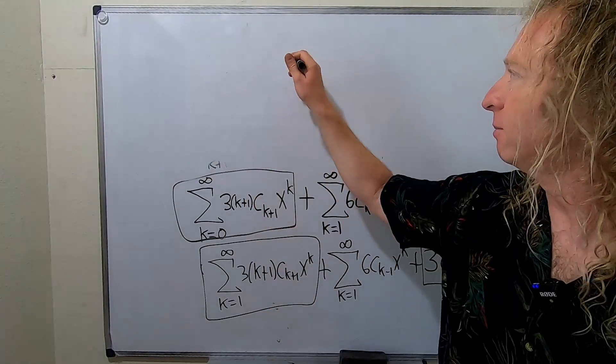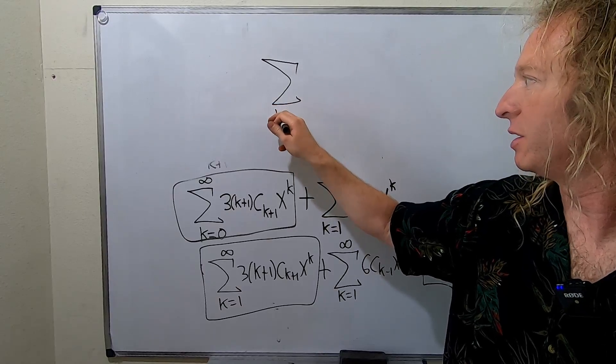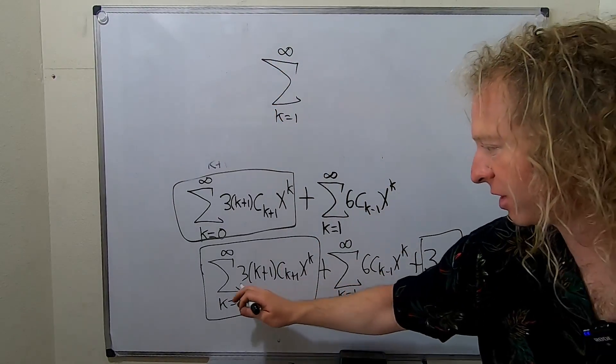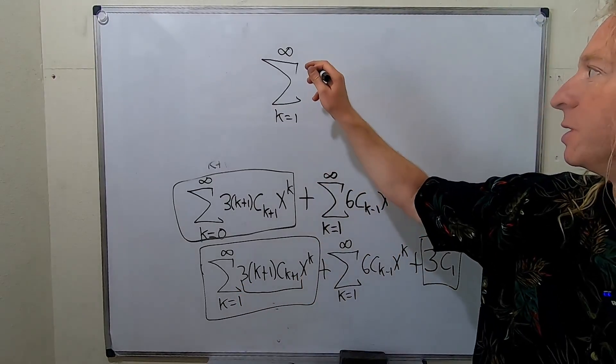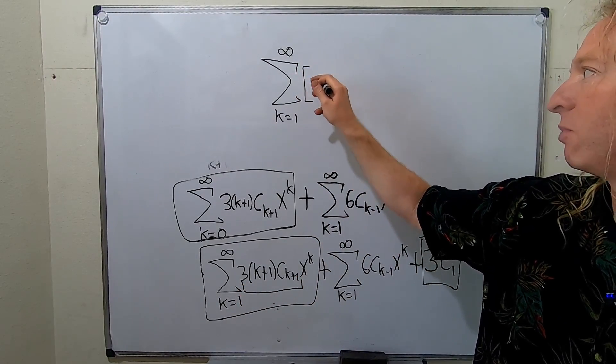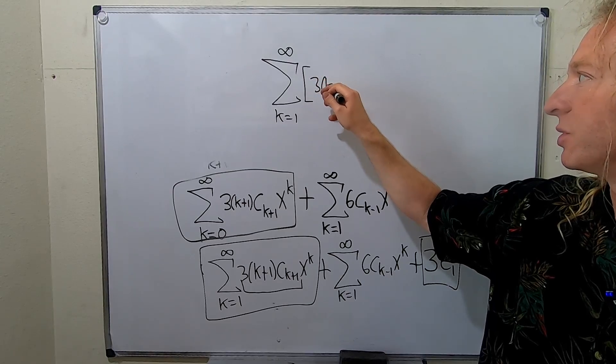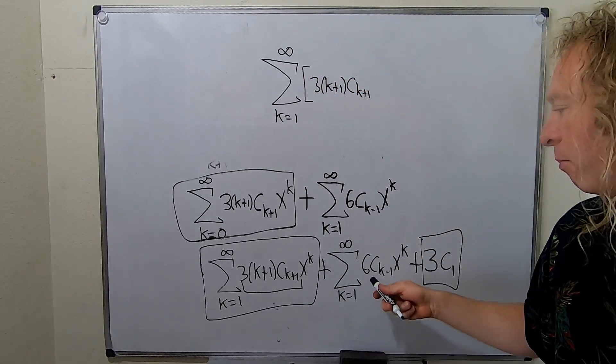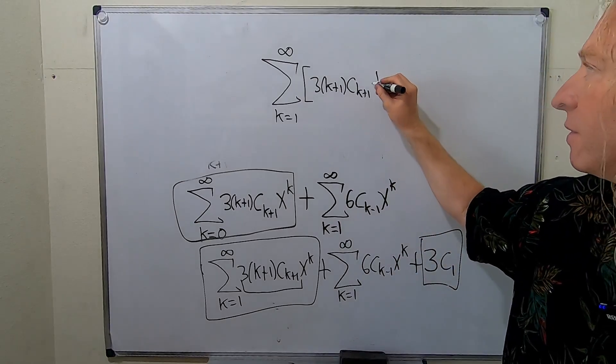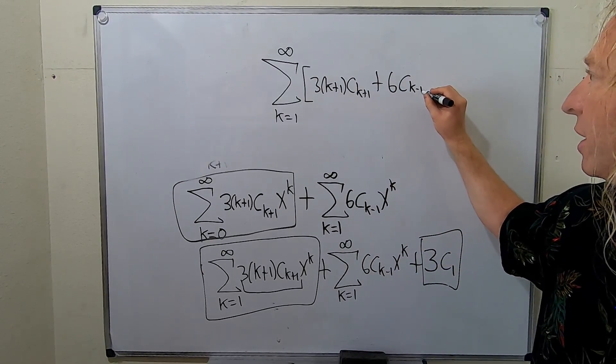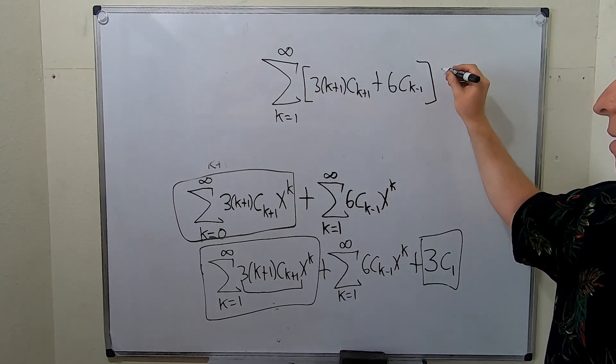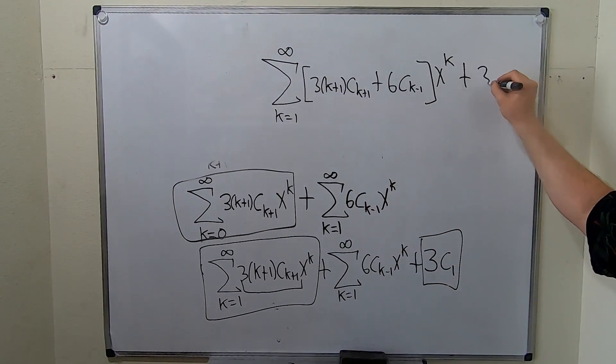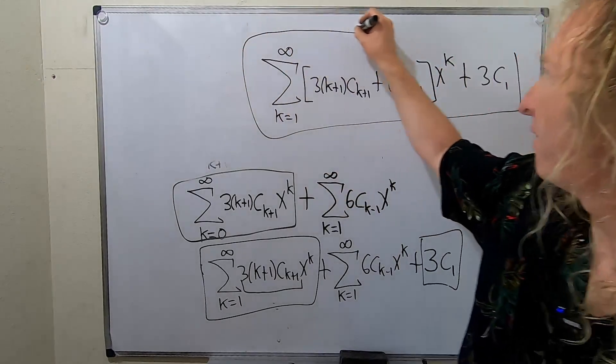So we have the infinite sum as k runs from 1 to infinity. And now we can factor out an x to the k. I'm just going to use a bracket for clarity. So [3(k+1) C sub k plus 1 plus 6 C sub k minus 1] x to the k. And we're not done. We still need this extra piece here. So plus 3 C sub 1. This would be the final answer.